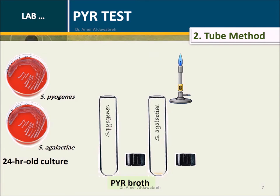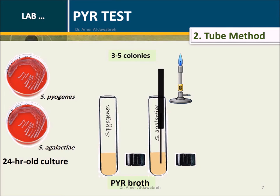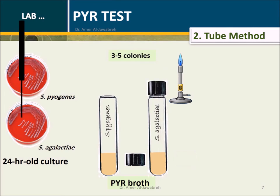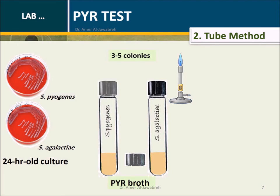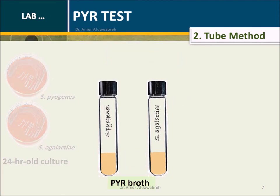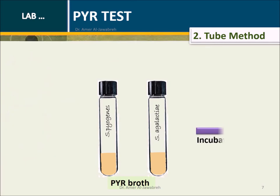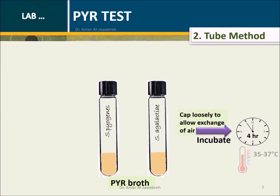Tube Method: Grow fresh cultures of S. pyogenes and S. agalactiae in separate tubes of PYR broth. Incubate at 35 degrees Celsius for four hours.